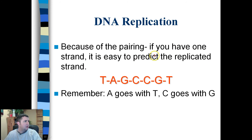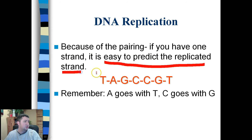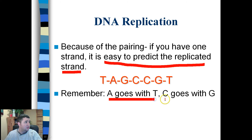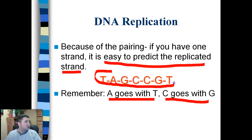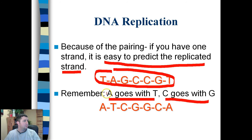Because of the base pairing, if you have one strand it's easy to predict the replication of the other strand. If you remember from my last video, the base pairing rules are: A goes with T, C goes with G, and G goes with C. So if you had one strand, you could predict what the other half would look like — T goes with A, A goes with T, G goes with C, C goes with G.